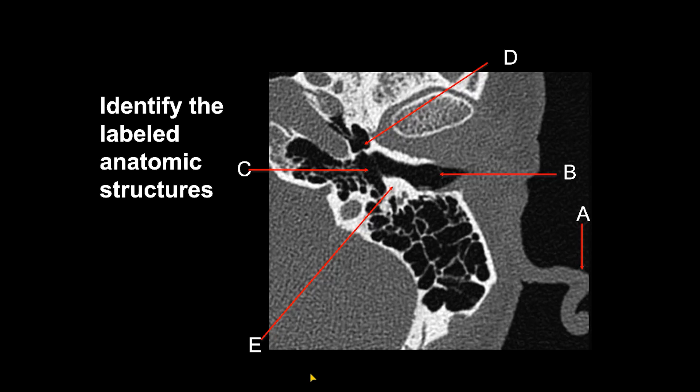On this axial CT scan in bone window, we identify A as the helix of the ear — a portion of the external ear. B is the cartilaginous portion of the external auditory canal, right at the junction between the cartilaginous and bony portions. C is the tympanic membrane — where the arrow points is actually the middle ear cavity, but you can faintly see the tympanic membrane. If you're doing CT scans two millimeters thick or less, you should routinely be able to see the tympanic membrane.